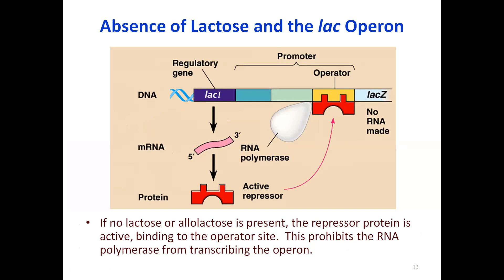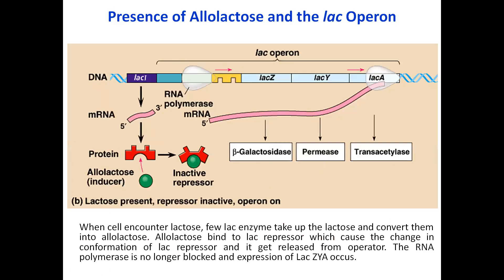When there is no lactose, the repressor is active and binds the operator. As the cell senses the presence of lactose, it is converted into allolactose, which acts as an inducer. The inducer binds the repressor, causing it to become inactive and be removed from the operator. RNA polymerase then transcribes the downstream structural genes — galactosidase, permease, and transacetylase — which are needed to break down the lactose.